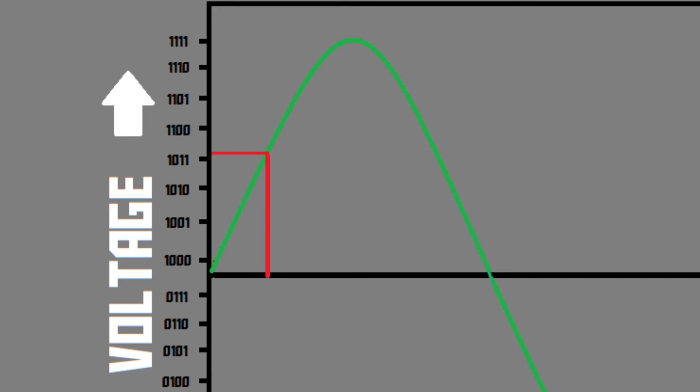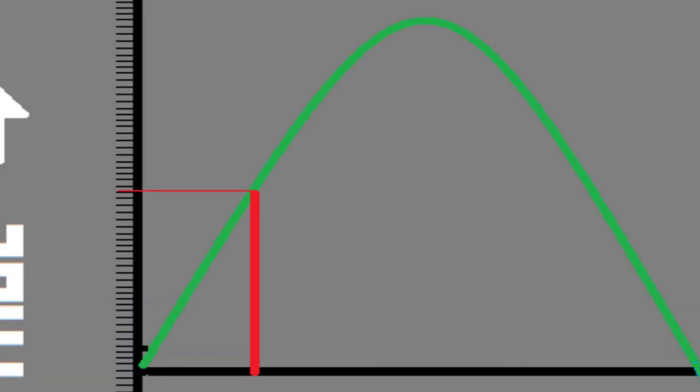Whereas if you have more bits of data per sample — say six bits — it can make 64 combinations, so there are now 64 different possible volume levels, and it can get much closer to the actual voltage. So the higher the number of bits per sample, the better it's going to sound. Generally, a 16-bit bit depth is considered pretty good — that's what CDs use — and 24-bit is considered studio quality.